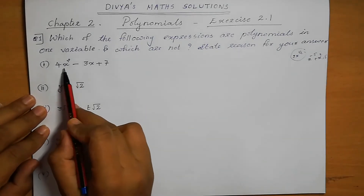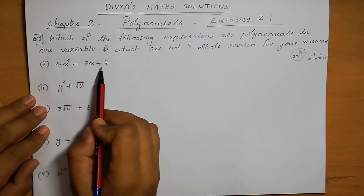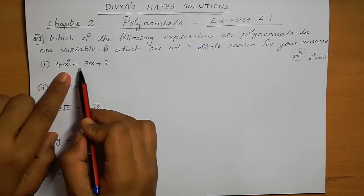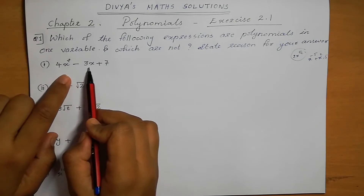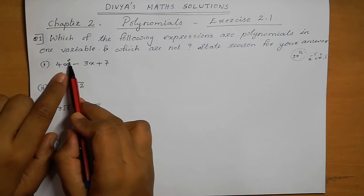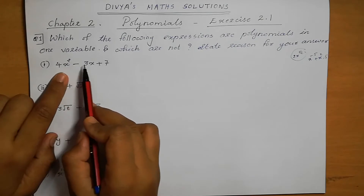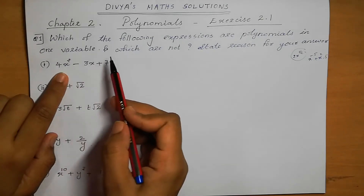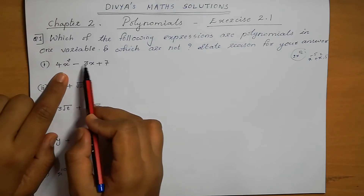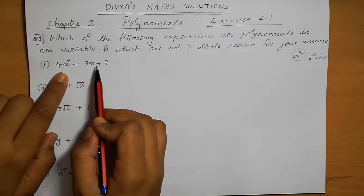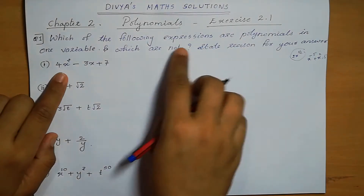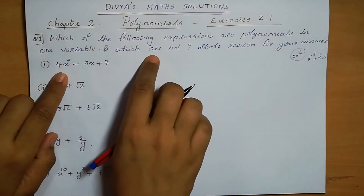First, let's check: 4x squared minus 3x plus 7. Here there is only one variable, which is x. The power of x is 2 and the other power is 1 — both are whole numbers. So this is a polynomial with one variable.